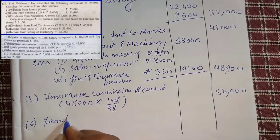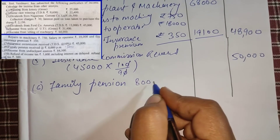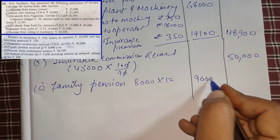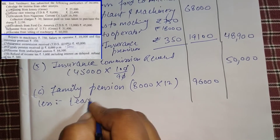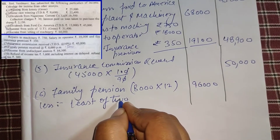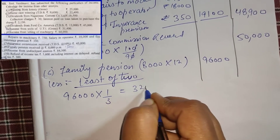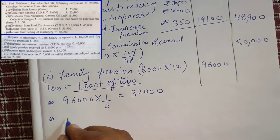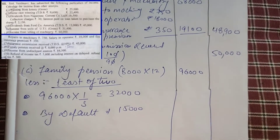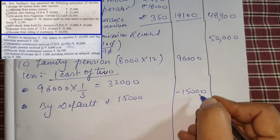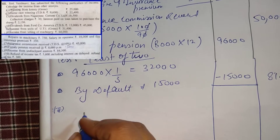Next, family pension received — this is a very important point you have to remember. Family pension: per month we will take 200, annual is 96,000. There are two conditions. First: 96,000 × 1/3 = 32,000. Second: by default, the standard deduction is 50,000 but maximum is 15,000. We take the least of the two: 15,000. So 96,000 minus 15,000 gives us 81,000.